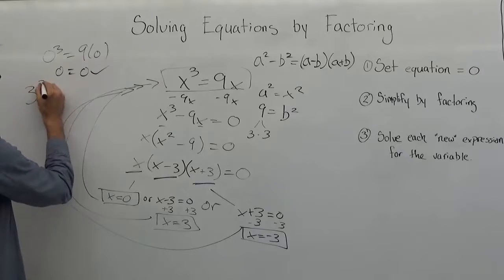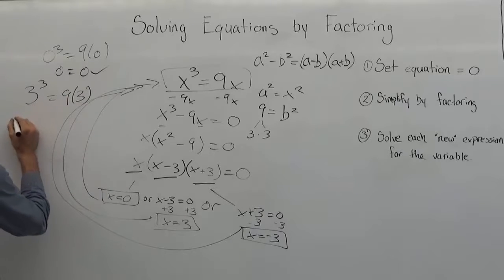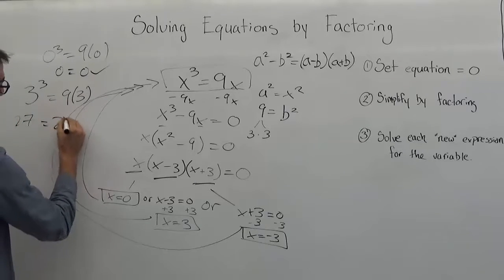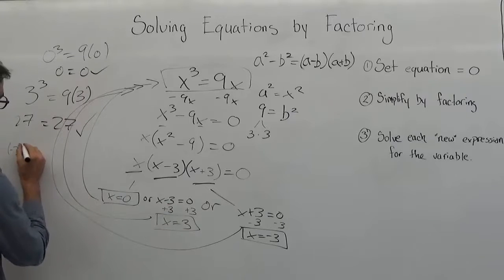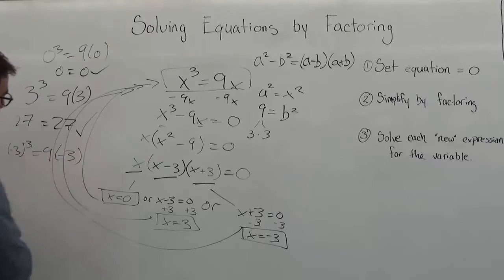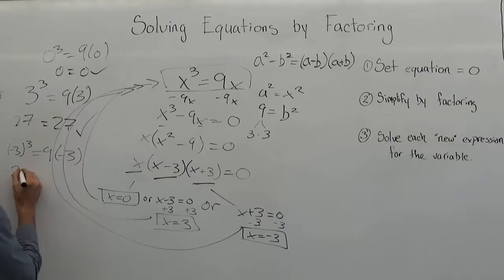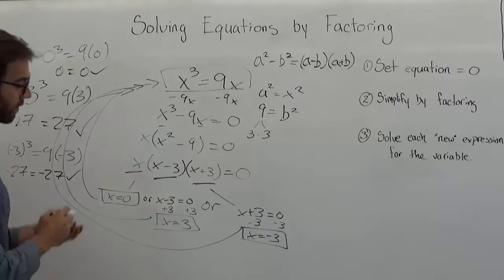When we have 3 to the third equals 9 times 3, that would be 27. It's equal to 27. That works. And we've got negative 3 to the third equals to 9 times negative 3. This would be equal to negative 27. This would also be equal to negative 27. So it looks like we're good.